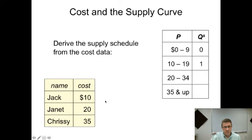Anything from ten to nineteen, Jack is happy to come in and provide a service. You have to get to twenty before you have two people who are willing to supply their services. Janet is willing to supply once the price hits twenty. And Chrissy won't jump into the market until the price is at least thirty-five dollars. So this is our supply schedule.